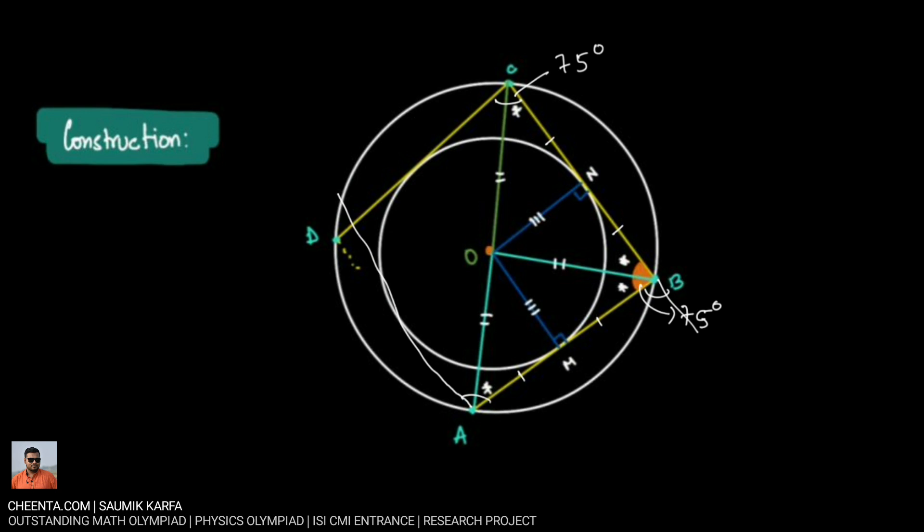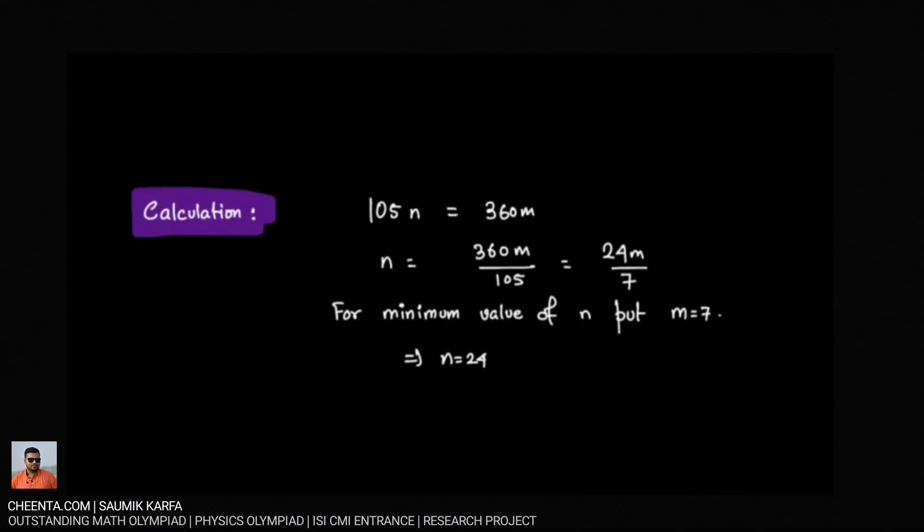So now it's very easy to create the equation. Some multiple of 105, which is 105n, should be equal to some multiple of 2π which is 360 degrees because we want to take a complete rotation or some multiple of a complete rotation.